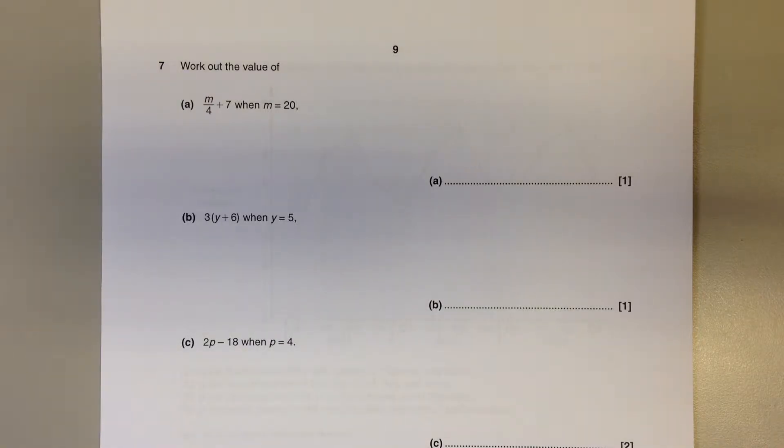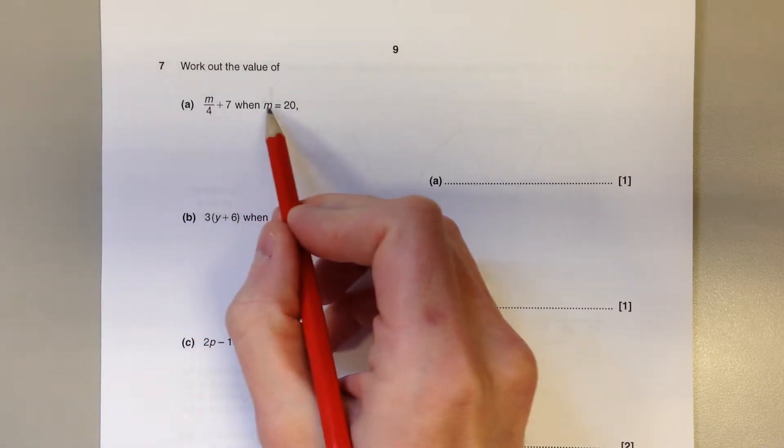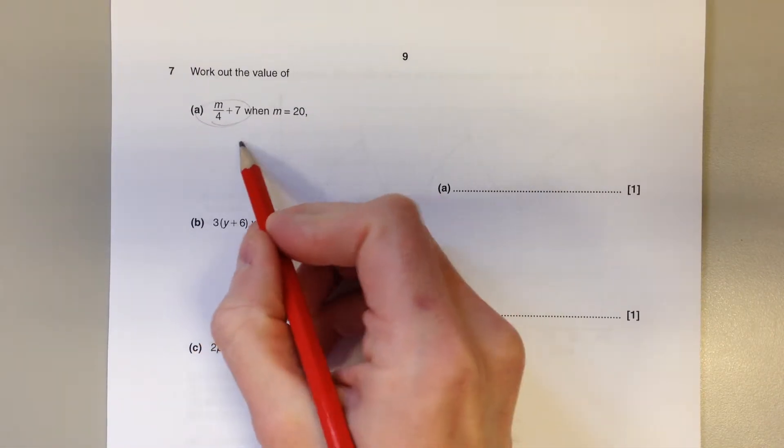Question number 7. This is a substitution question. We have to replace m with the number 20 and work out what this is equal to.